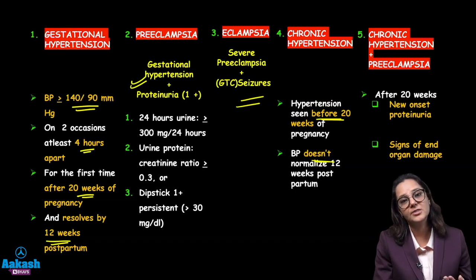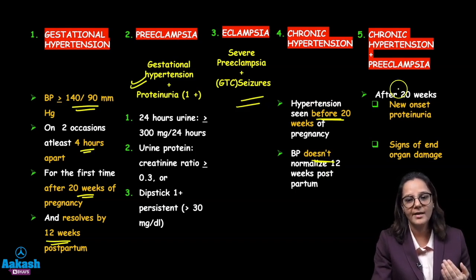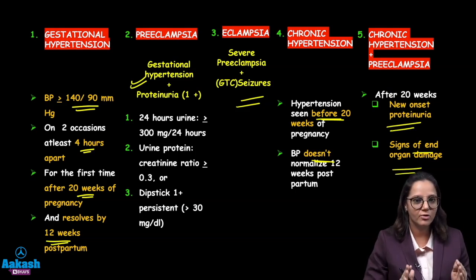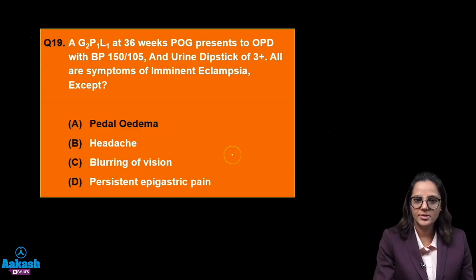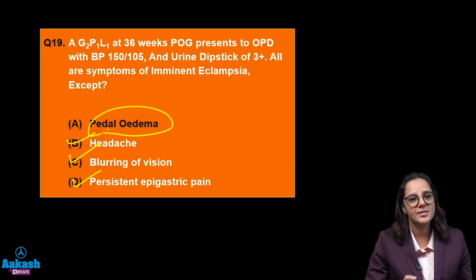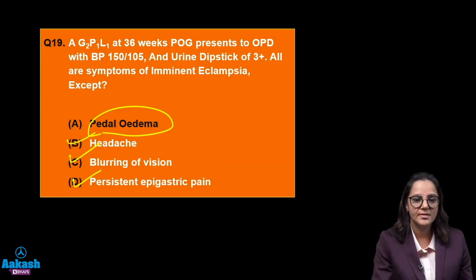Chronic hypertension plus preeclampsia means the patient has proteinuria and signs of end-organ damage, but raised blood pressure even before 20 weeks. Coming back to the question: headache — yes, blurring of vision — yes, persistent epigastric pain — yes. Pedal edema? This is a physiological sign of pregnancy, so this is the answer — it is not a sign of imminent eclampsia.